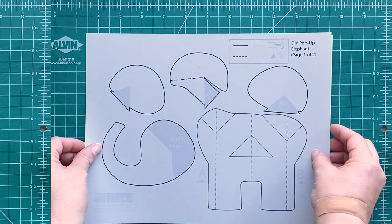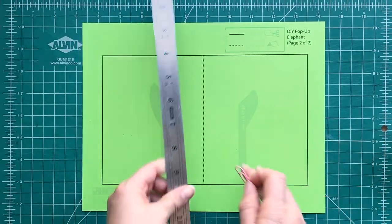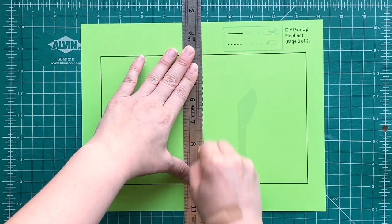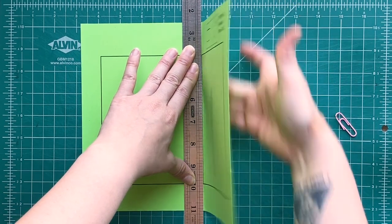On the templates you're gonna see there are two types of black lines: there are solid black lines and there are dotted black lines. The dotted black lines are gonna be where we make folds and that's what's called scoring.